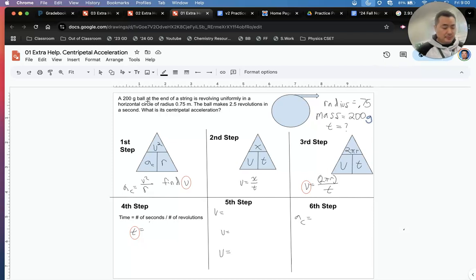So Caleb, the fourth step tells us how to find time. How many seconds has how many revolutions? 2.5 revolutions. So everyone take your pen or pencil and draw 2.5 at the bottom. And then how many seconds is there at 2.5 revolutions? It says a second means one second. So everyone put 1 over 2.5.